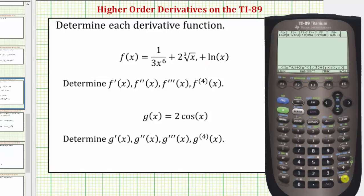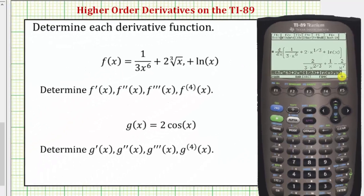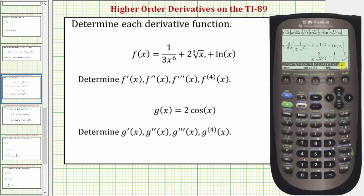Let's go ahead and press Enter. We now know F prime of x is equal to this function here. And now to find the second derivative, which is the derivative of the first derivative, we can edit this previous entry by placing a comma two after the x.